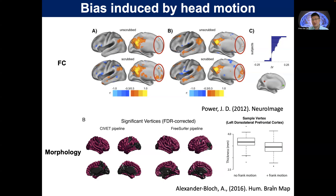For example, when you do a development study, kids usually move their heads much more than adults. When you do a disease study — for example, schizophrenia — patients move their heads much more than controls. So the effects you find: whether they reflect true neuronal effects or just reflect high motion artifacts.